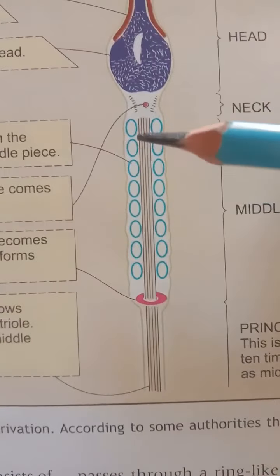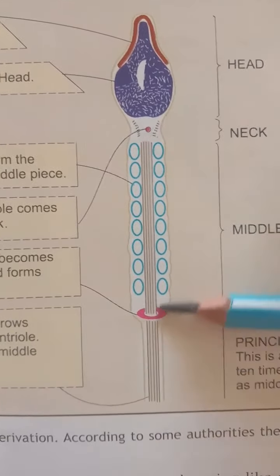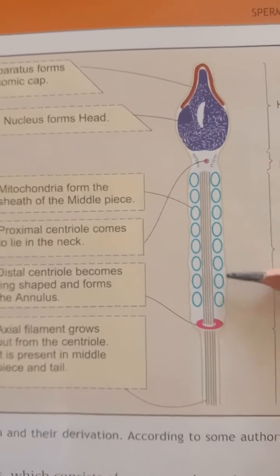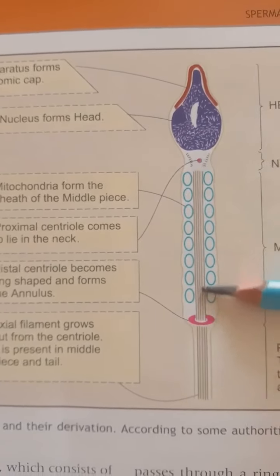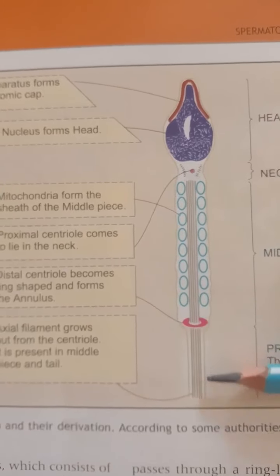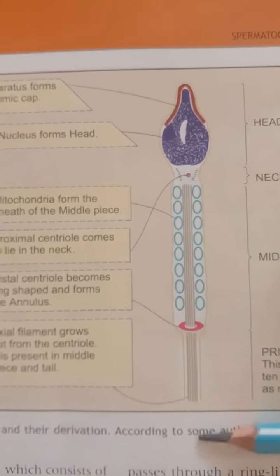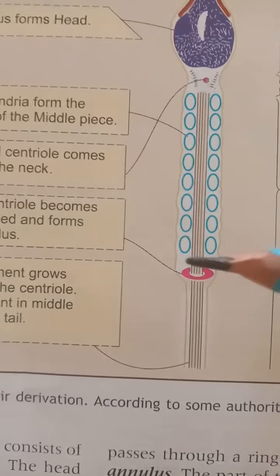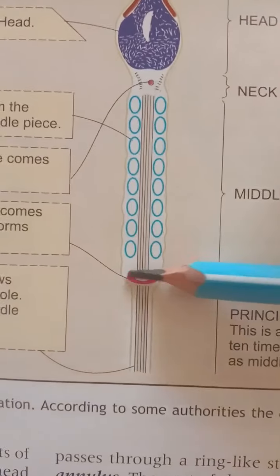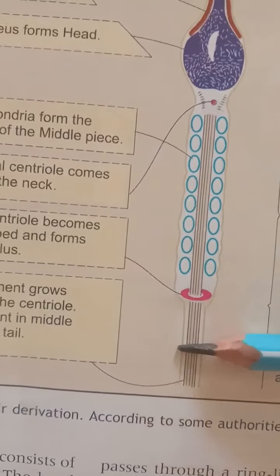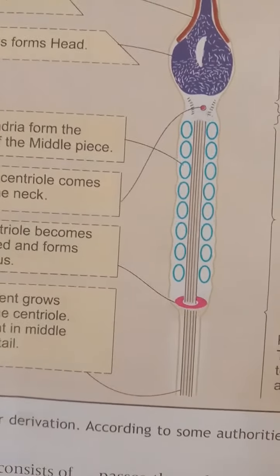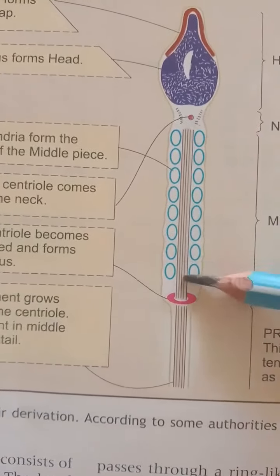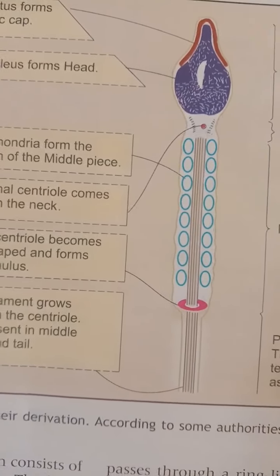Then the axial filament — the vertical linings seen here are called the axial filament. The axial filament begins just behind the centriole and passes through the middle piece and most of the tail of the spermatozoa. The axial filament passes through a ring-like structure called the annulus. The part of the axial filament which lies in the middle piece is surrounded by a spiral sheath of mitochondria.